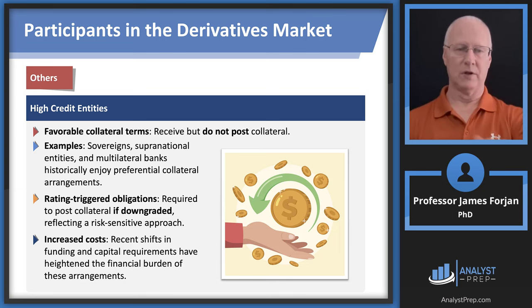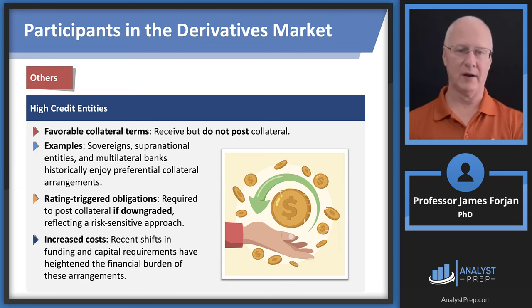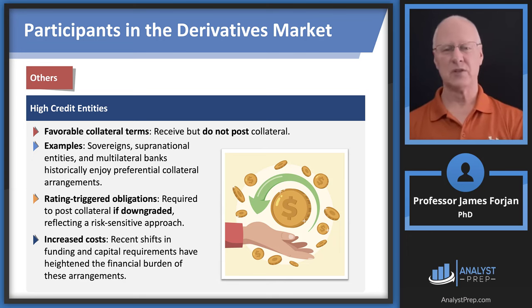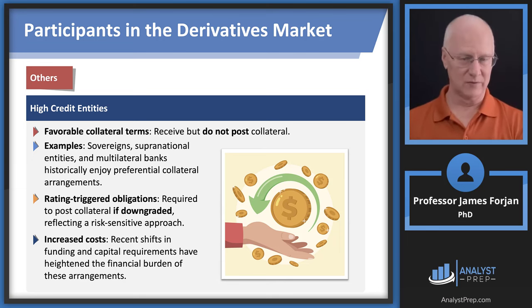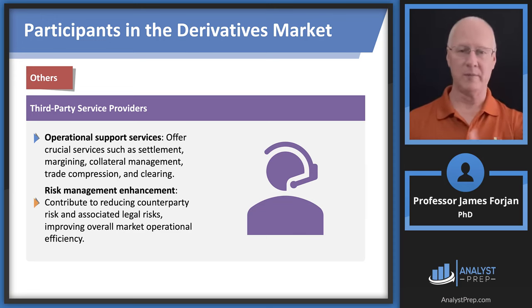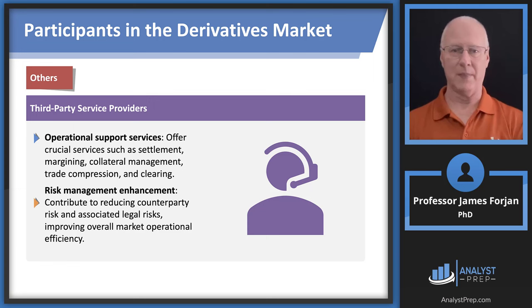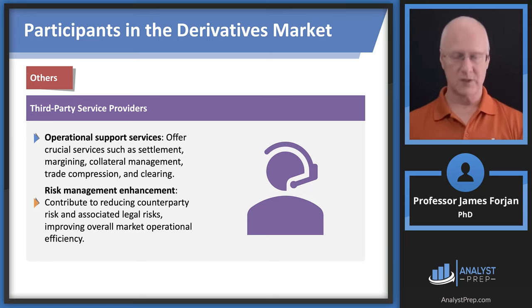High credit entities receive but don't have to post collateral, reflecting their high credit rating. But if they're downgraded, they still need to play by all the rules. There are also third-party service providers handling settlement, margining, and collateral management — tons of people out there offering financial services to support liquidity in these markets. Exchange-traded derivatives are settled daily with cash payments, making them highly liquid and generally very safe. OTC markets are less liquid and less safe.